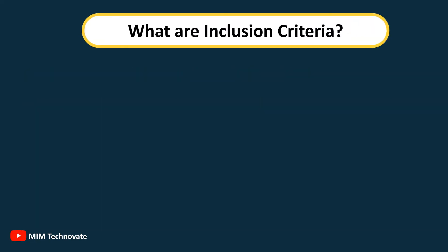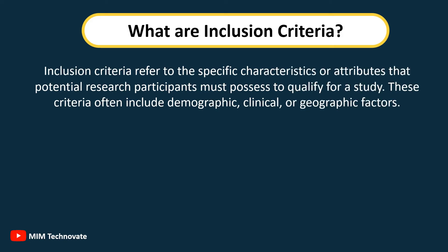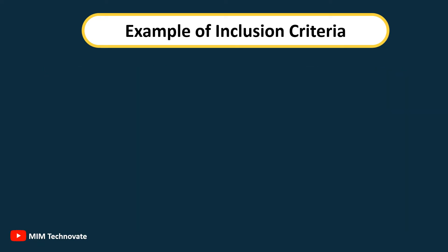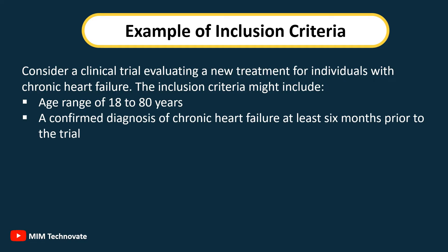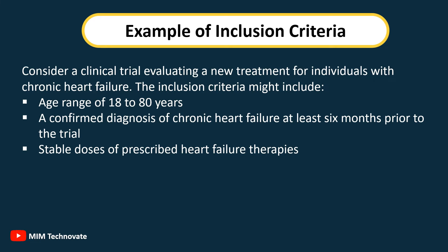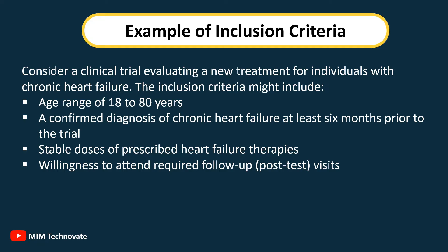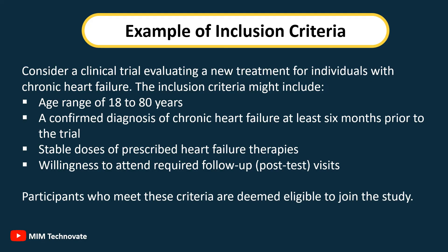Inclusion criteria refer to the specific characteristics or attributes that potential research participants must possess to qualify for a study. These criteria often include demographic, clinical, or geographic factors. For example, in a clinical trial evaluating a new treatment for chronic heart failure, inclusion criteria might include an age range of 18 to 80 years, a confirmed diagnosis of chronic heart failure at least 6 months prior, stable doses of prescribed heart failure therapies, and willingness to attend required follow-up visits.